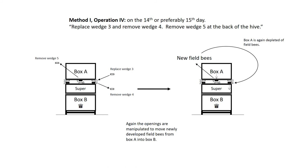Method one, operation four. On the fourteenth or preferably fifteenth day, replace wedge three and remove wedge four. Remove wedge five at the back of the hive. The new field bees in A are siphoned into B by leaving from opening five and returning by opening four.